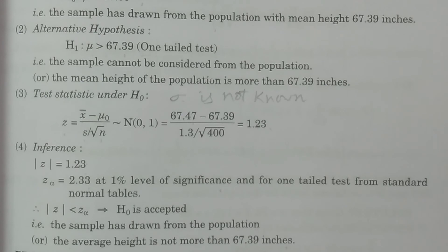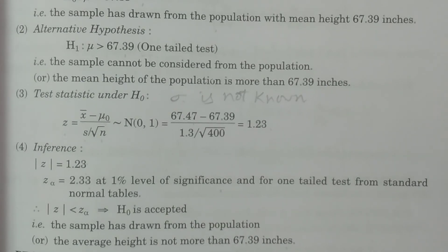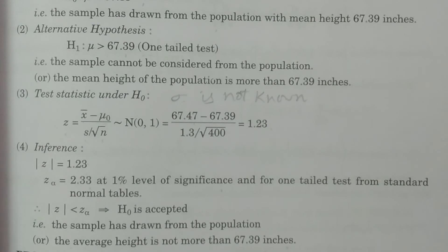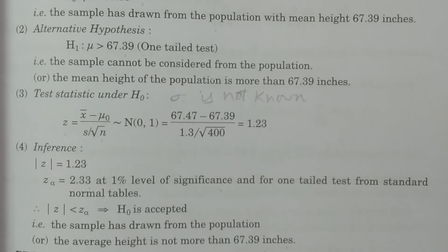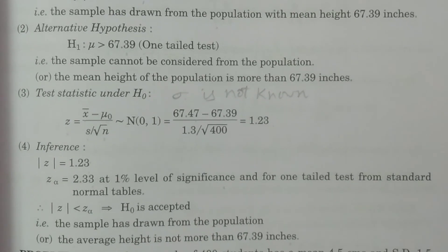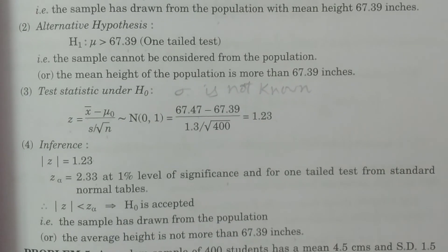This is Case 2 — we have observed in this particular problem Case 2: sigma is not known. And according to the alternative hypothesis, the test is a one-tailed test. So these are the two cases we have observed in the single mean test.